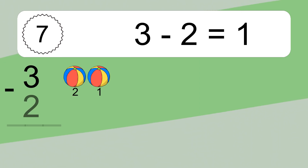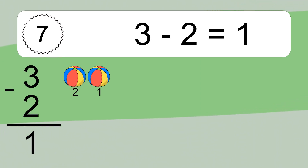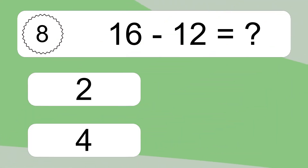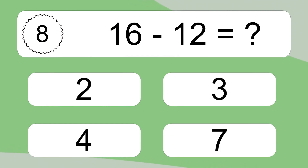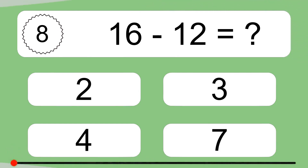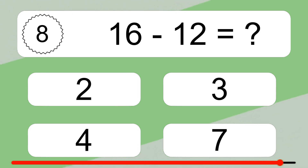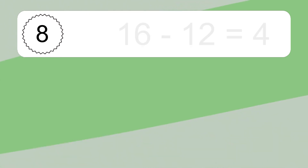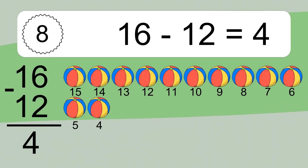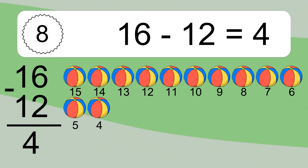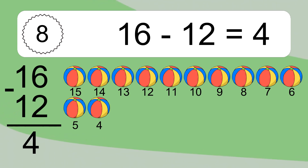3 minus 2 equals what? 3 minus 2 equals 1. Let's count it. 16 minus 12 equals what? 16 minus 12 equals 4. Let's count it: 15, 14, 13, 12, 11, 10, 9, 8, 7, 6, 5, 4.